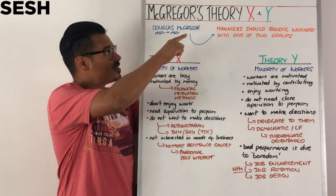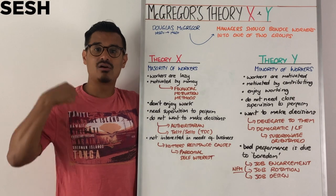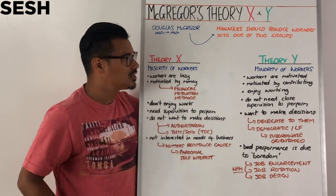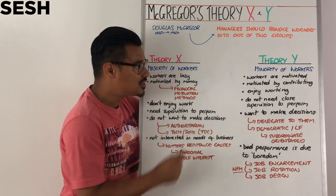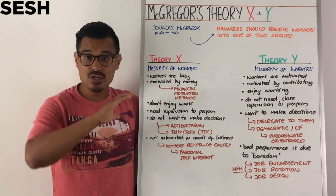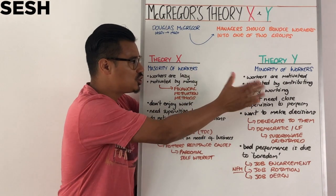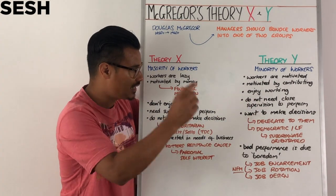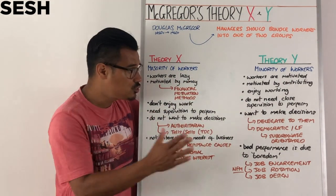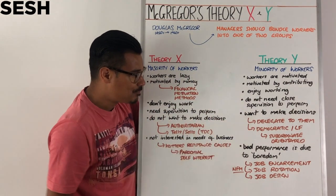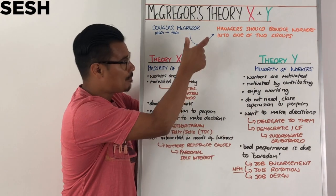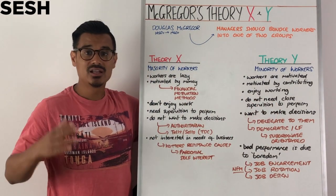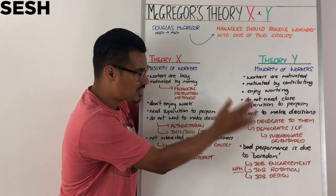Now that's the majority of workers that MacGregor said. He did actually say there are a minority of workers that are Theory Y. Theory Y is that workers are motivated. Workers are contributing to the organisation and they enjoy contributing to the organisation. They enjoy working. They do not need close supervision to perform to the level expected of them, and they want to make decisions, so you can delegate to them. You might want to employ, if you're a manager, a democratic or even a laissez-faire type of management style, because that's what's going to motivate them.